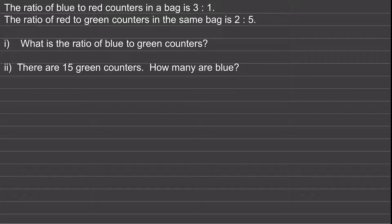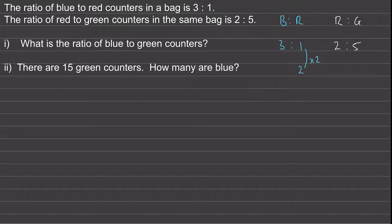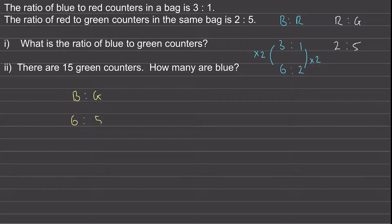Welcome back if you had a go. First, I'm going to write a ratio for blue to red, which is three to one. Then the next part, we have red to green, which is two to five. You can see that red is the colour which connects the two two-part ratios. So what we need to do is write the blue to red ratio where we have two red — by multiplying by two we do the same to the blue side and get six. So now when we have two red we have six blue and five green. The ratio blue to green is six to five.